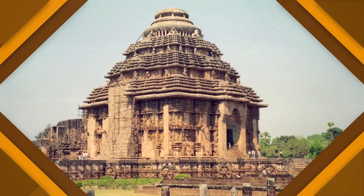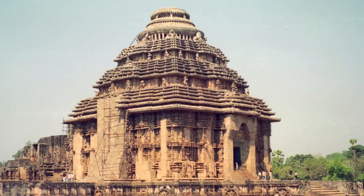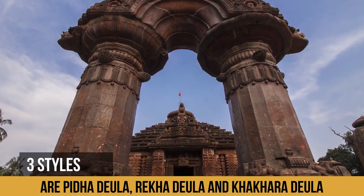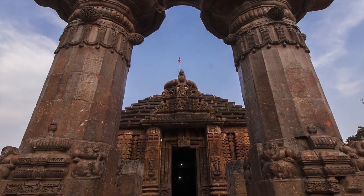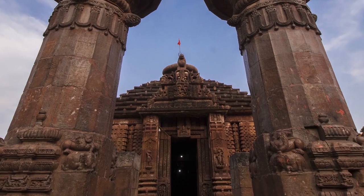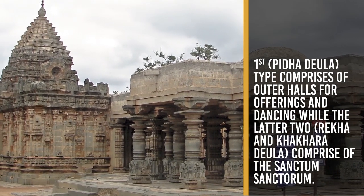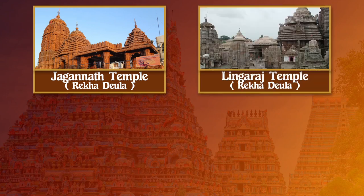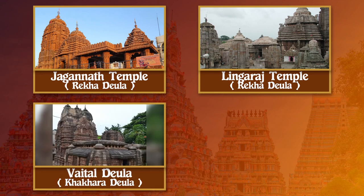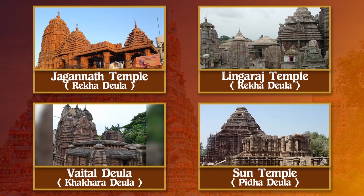Kalinga architecture has three specific types of temples that prospered in Odisha and northern Andhra Pradesh: Pidha Deula, Rekha Deula and Khakhara Deula. The first two are linked with Shiva, Surya and Vishnu while the latter is predominantly associated with Goddess Durga and Chamunda. The Pidha Deula and Rekha Deula comprise outer halls for offering and dancing, while the latter two comprise a sanctum sanctorum. The Jagannath temple of Puri and the Lingaraj temple of Bhubaneswar portray the Rekha Deula style, while the Vaital Deula of Bhubaneswar signifies the Khakhara Deula, and the Sun Temple at Konark is a prominent example of the Pidha Deula.